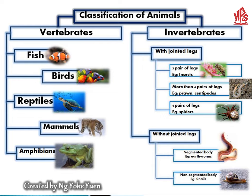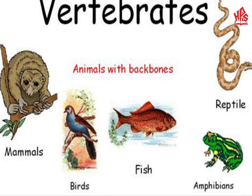Vertebrates can be further subdivided as fish, birds, reptiles, mammals, and amphibians. Invertebrates can be subdivided into two groups: animals with joined legs and without joined legs. Vertebrates are the kind of animals which have backbones, including mammals, birds, amphibians, fishes, and reptiles — all have a backbone.